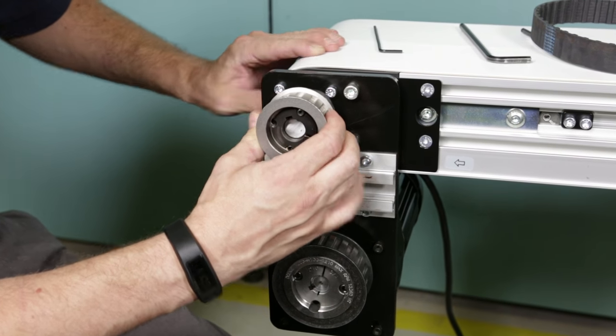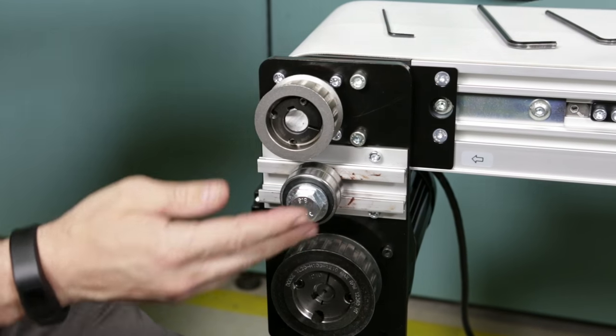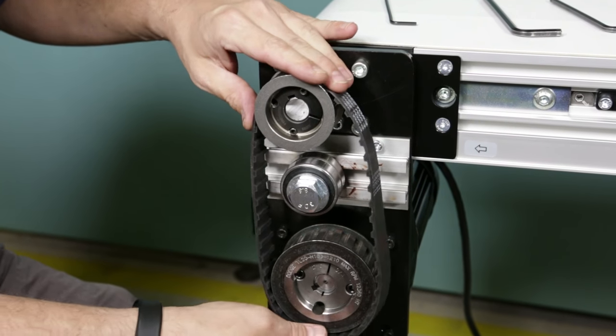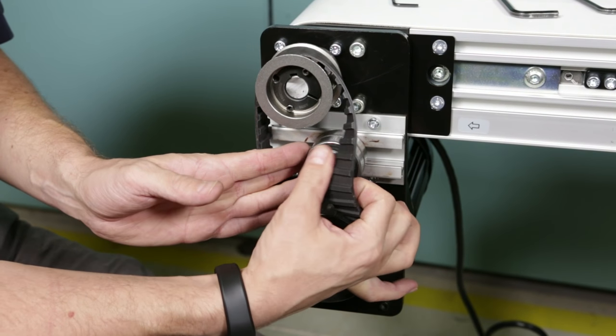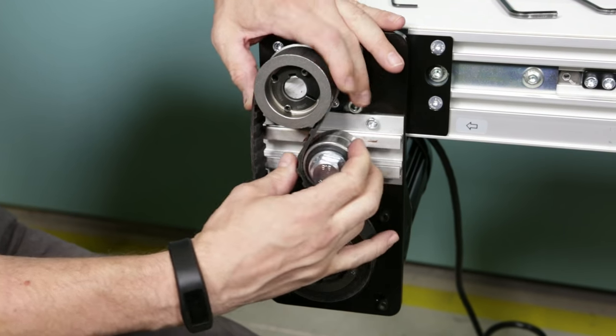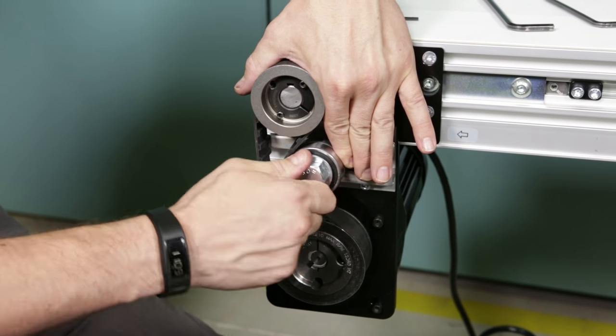Install the driven pulley onto the conveyor shaft. Place the timing belt around the driven pulley and the drive pulley. Depending on the conveyor belt direction, locate the timing belt tensioner as shown in the manual. Tension the timing belt and loosely tighten the tensioner screw.